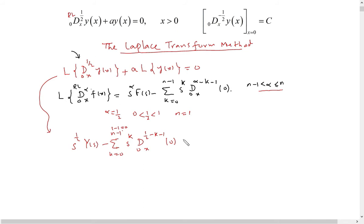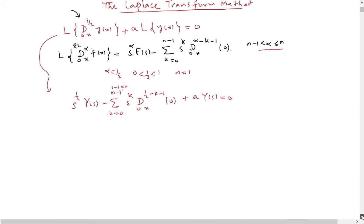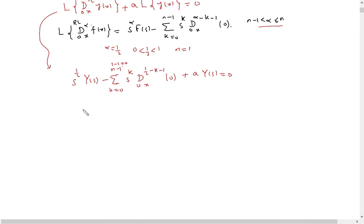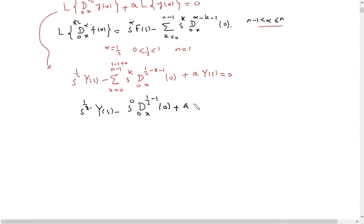Simplifying: it becomes s^(1/2) times Y(s) minus, since the summation is only at k=0, we put k=0, so s^0 times the fractional derivative from 0 to x of order one-half minus zero minus one, evaluated at zero — which gives order minus one-half at zero — plus a times Y(s) equals zero.